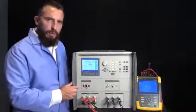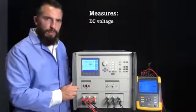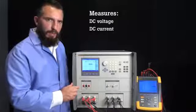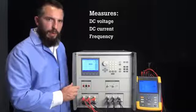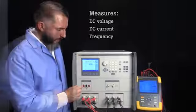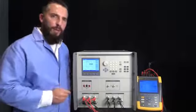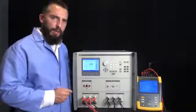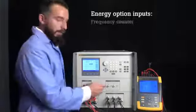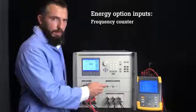The input section provides inputs that can measure DC voltage, DC current, or frequency from the output of a power meter or transmitter. If equipped with the energy option, the 6003A has an auxiliary input which provides a frequency counter that counts the pulses from the energy meter.